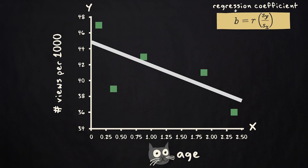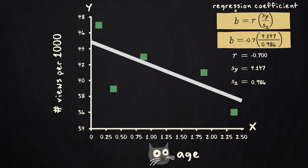The regression coefficient is equal to the correlation between x and y, cat age and video popularity, times the standard deviation of y, divided by the standard deviation of x. Suppose in our sample the correlation between cat age and video popularity is minus 0.700, and the standard deviations are 4.147 and 0.968, respectively. Then the regression coefficient is minus 0.700, times 4.147, divided by 0.968. Rounded off, this equals minus 3.